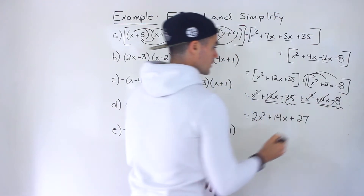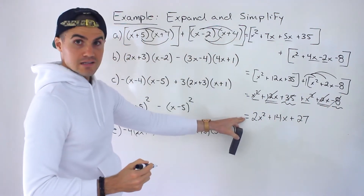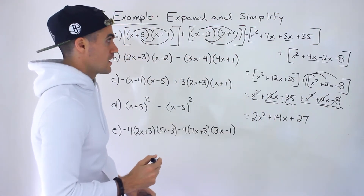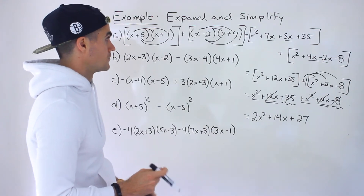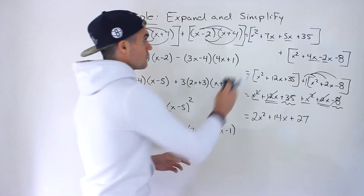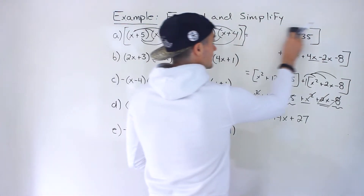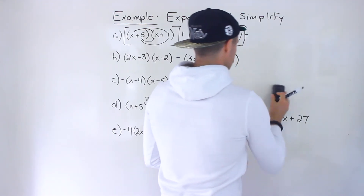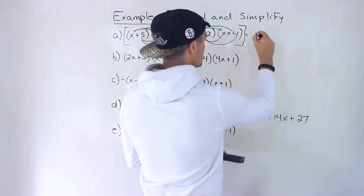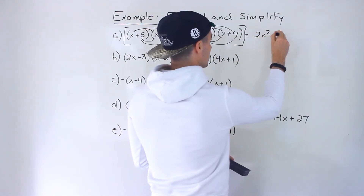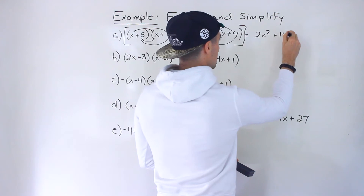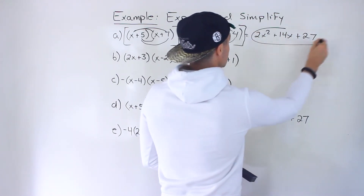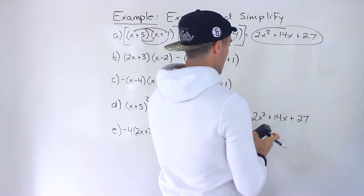This does not simplify any further. So that ends up being the answer for part A: 2x squared plus 14x plus 27.